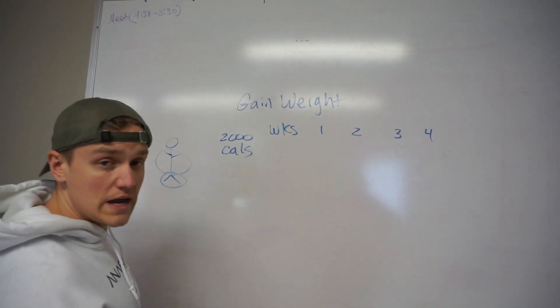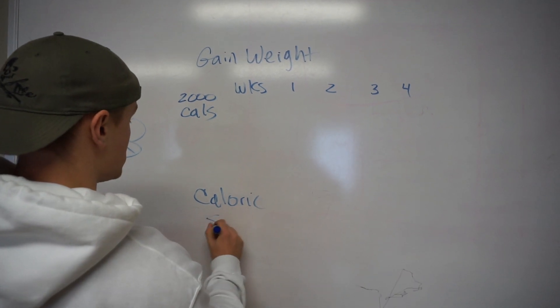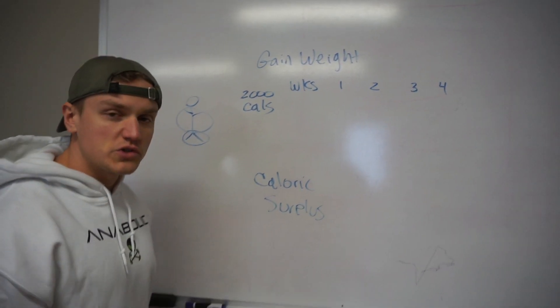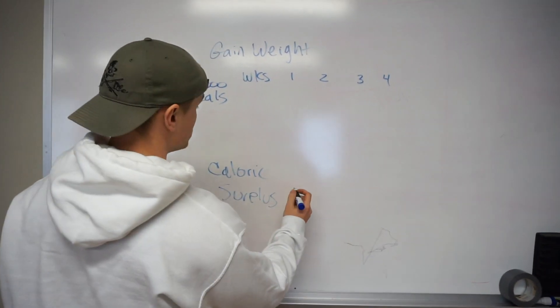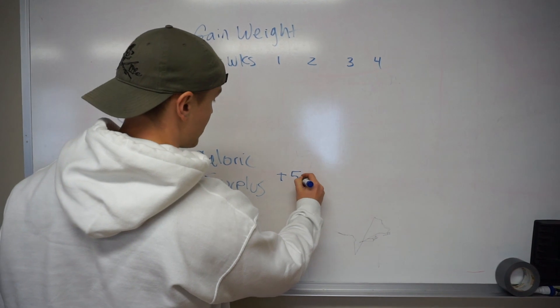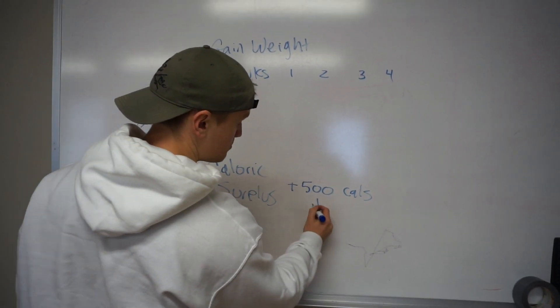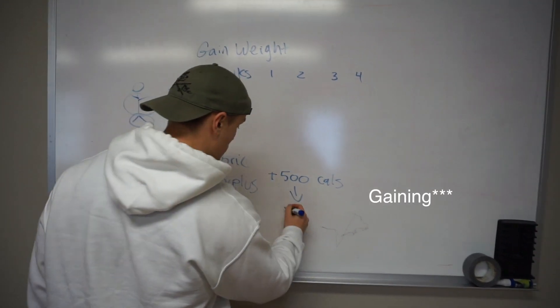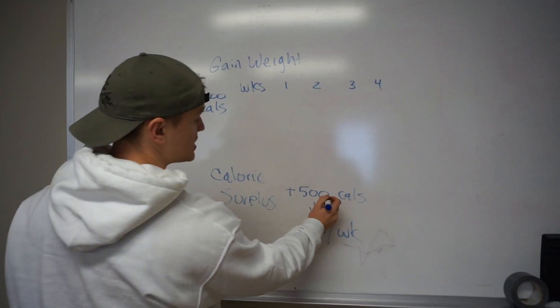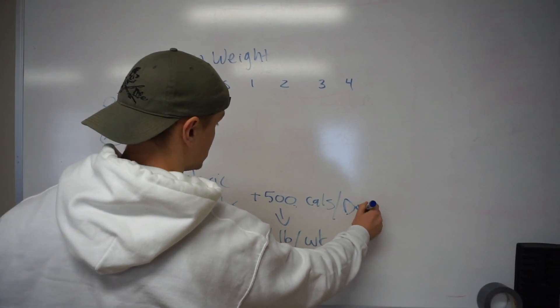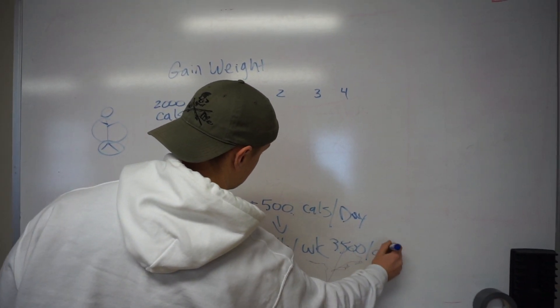Obviously, if you're trying to gain weight, you need to be in what's called a caloric surplus. The typical caloric surplus that you want to be in when you start out trying to gain weight is you'll add about 500 calories. And that 500 calories is going to pretty much show as gaining one pound per week on average. So that's every single day, and in a week we're at 3,500 calories.